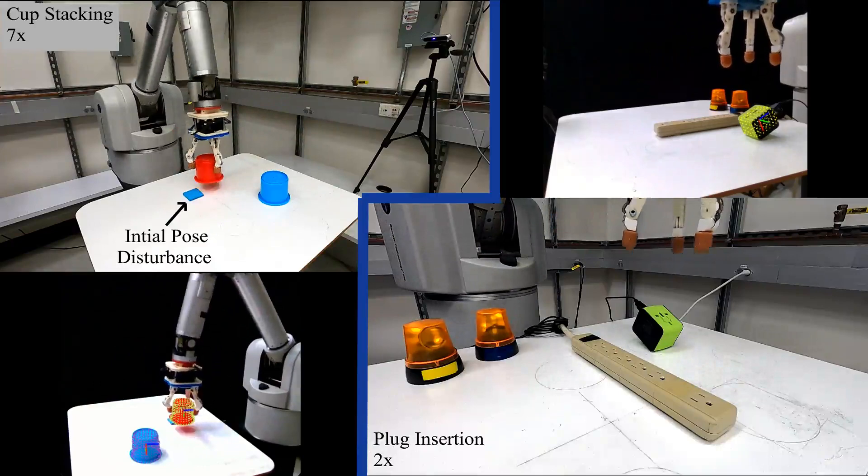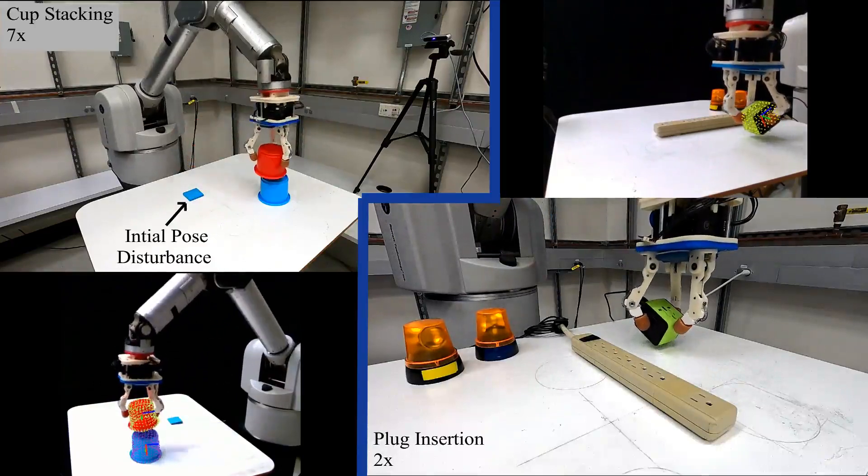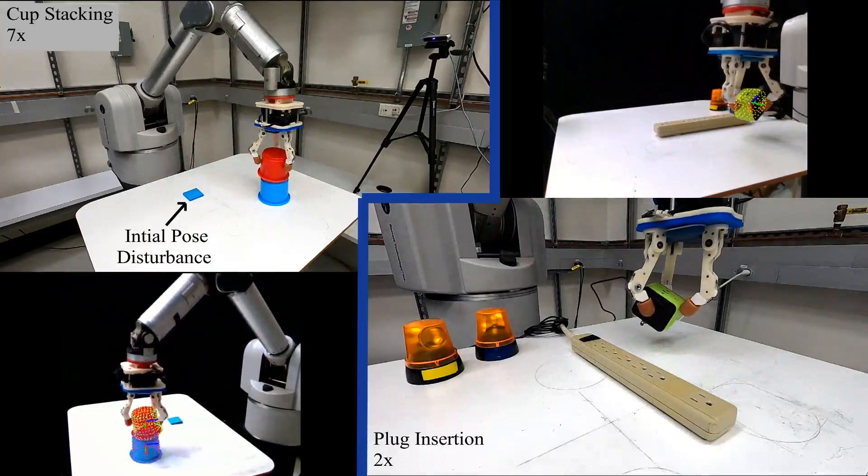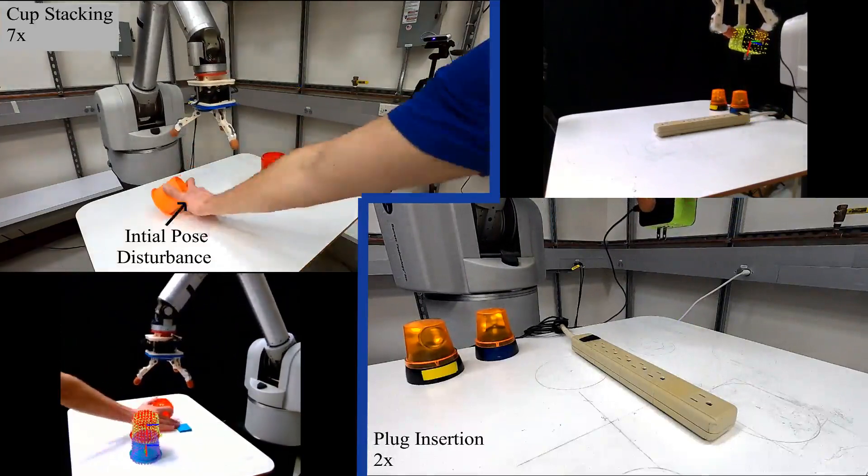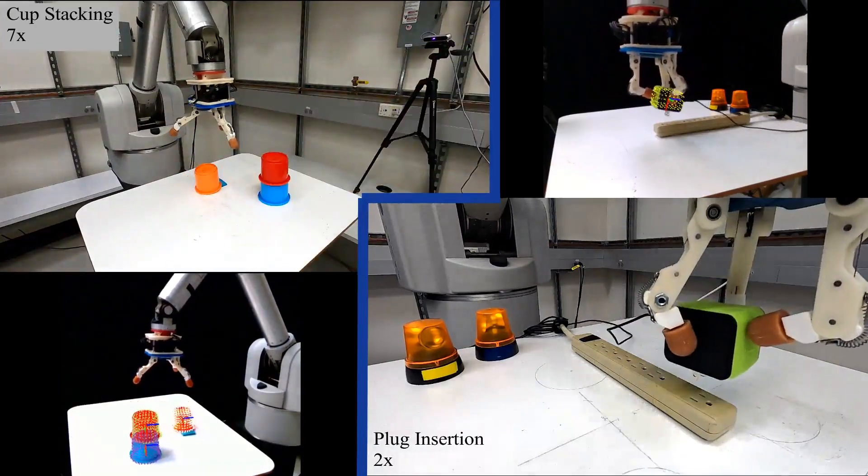We also increase task difficulty of our open-world tasks by performing cup stacking and plug insertion. For cup stacking in particular, state feedback of the underlying cups is necessary, as small errors in placement can easily lead to task failure.